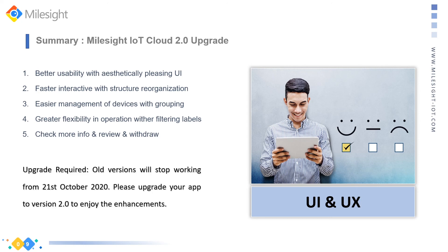Okay my friends, that's all we have — a very general introduction about the Milesight IoT Cloud version 2. Hopefully everything is clear now, and I also hope you can make use of the free trial in order to build up your own LoRaWAN network — your own private LoRaWAN network — very quickly. Thanks very much for staying with me until the end of the presentation. See you next time, bye-bye.